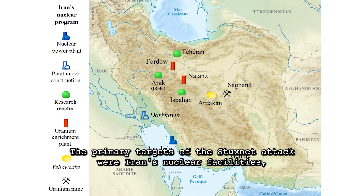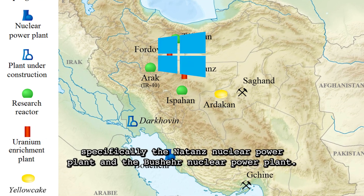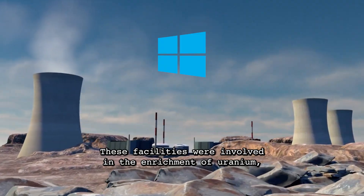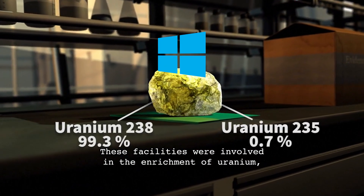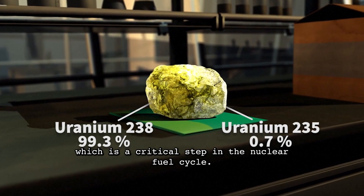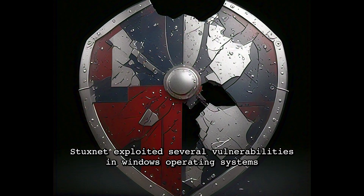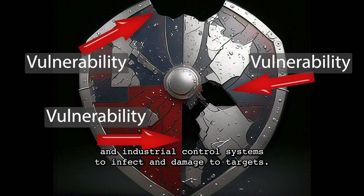The primary targets of the Stuxnet attack were Iran's nuclear facilities, specifically the Natanz nuclear power plant and the Bushehr nuclear power plant. These facilities were involved in the enrichment of uranium, which is a critical step in the nuclear fuel cycle. Stuxnet exploited several vulnerabilities in Windows operating systems and industrial control systems to infect and damage the targets.